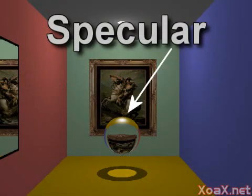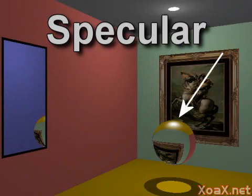The only specular reflection in this scene comes from this glass sphere. As we see here, the position changes with the observer.